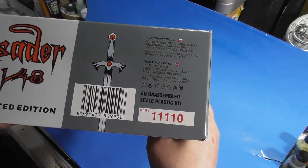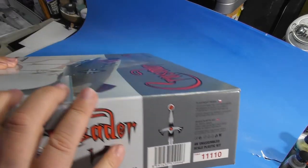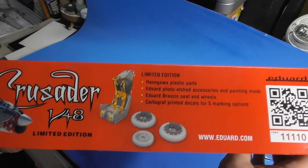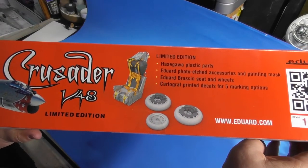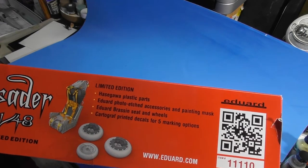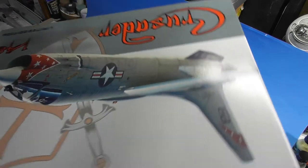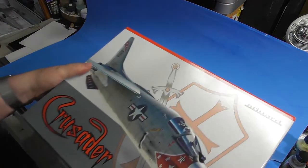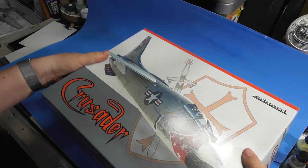Kit number 1110 comes with resin seats, wheels, photo etch, painting mask, cartograph decals. So, let's check it out.